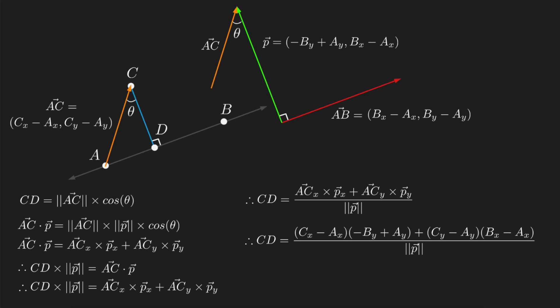All we have to do now is calculate the length of p, which is just done using the Pythagorean theorem, square root of x squared plus y squared.